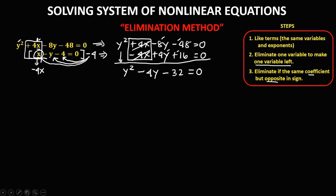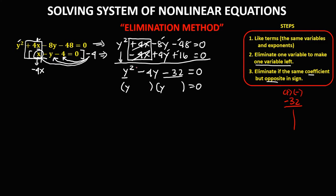Since this is a quadratic equation, we can solve it by factoring. First, write y on both sides of the factor. Then list all factor pairs of negative 32. Since the constant is negative, one factor is positive and one is negative. The factor pairs are: negative 32 times 1, negative 16 times 2, and negative 8 times 4.